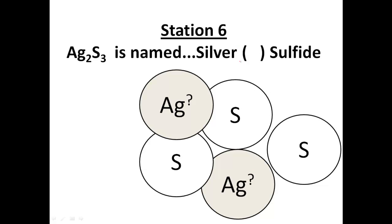Here's another one. Sulfur has a 2− charge; adding all three up gives a total negative charge of 6−. Just like the last example, I need 6+ — but this time it's distributed over two atoms, so six divided by two is 3+. Therefore this is silver(III) sulfide.